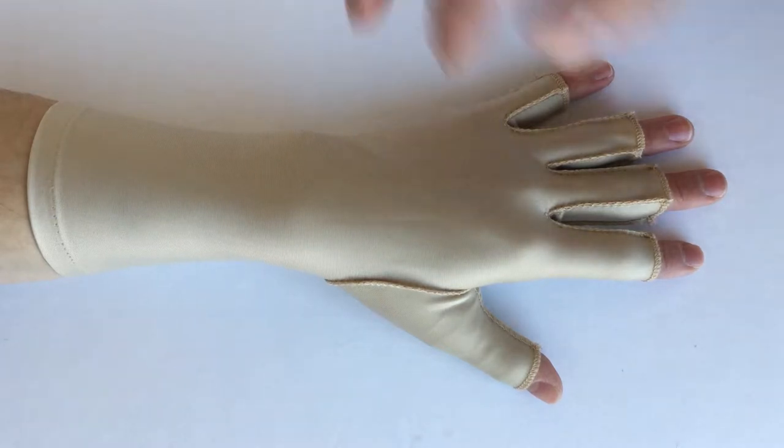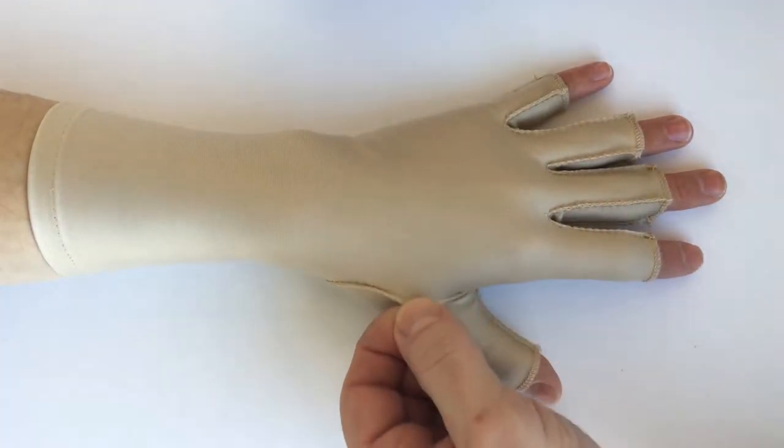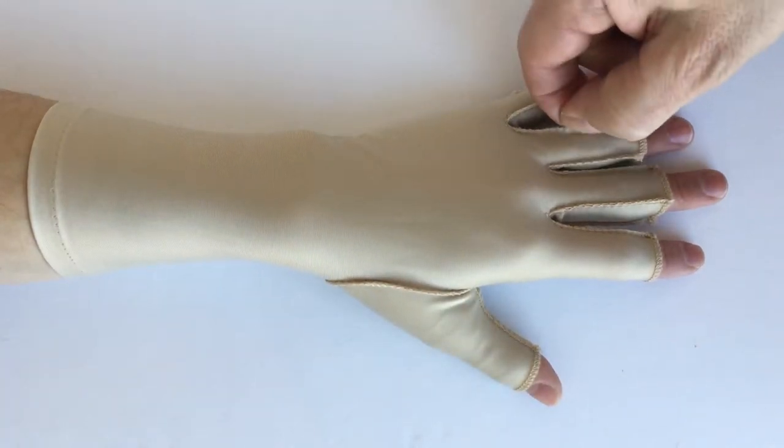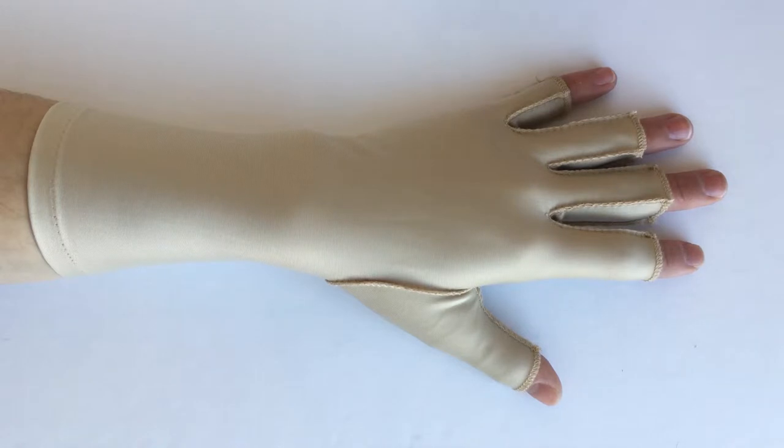When using an edema glove, the seams go on the outside and you can just tug on a seam a little bit to see if you have adequate compression. You want the edema glove to be snug but not tight.